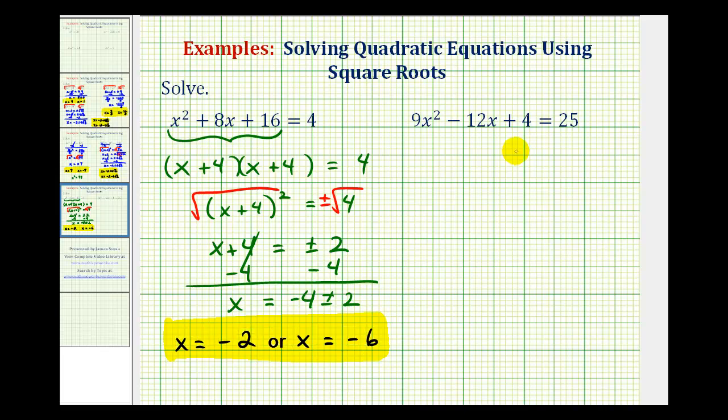The same thing is true about our second example. This left side happens to be a perfect square trinomial. Notice the first term is a perfect square, and so is the third term. So this will factor into two binomial factors.